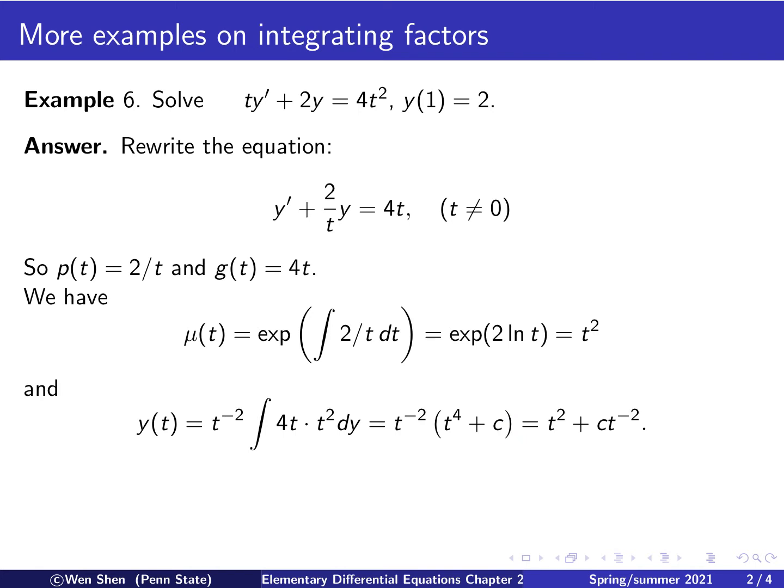And finally we can distribute this term onto both, and we will get t squared, because of these terms, plus c times t to the negative 2.